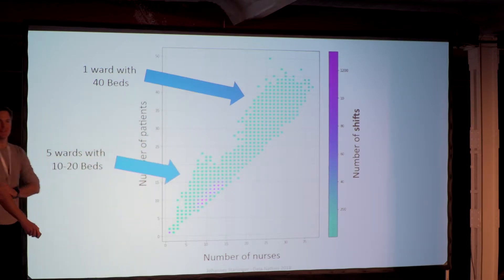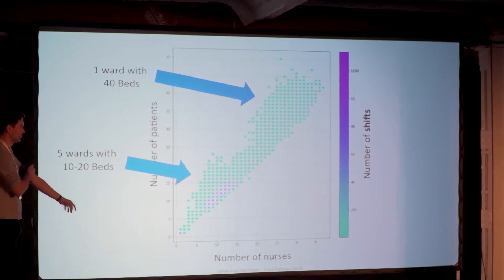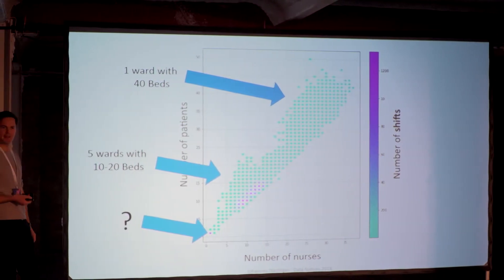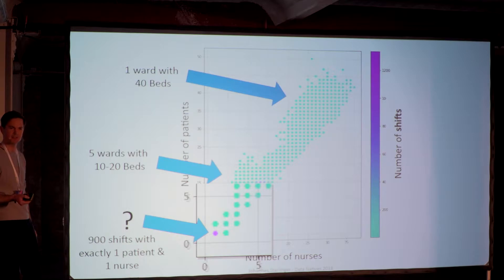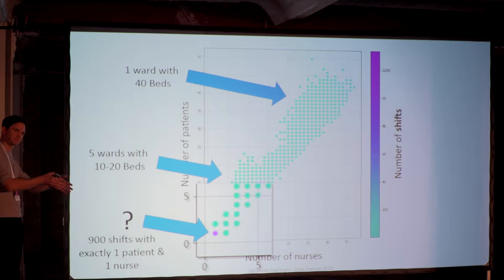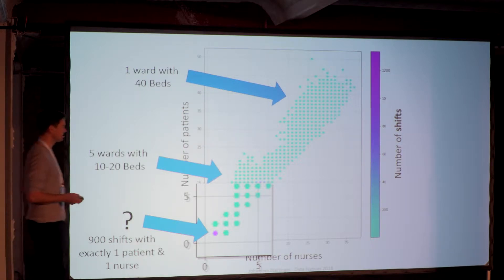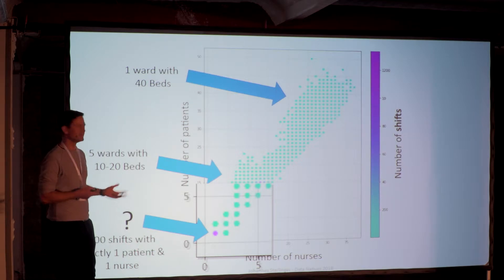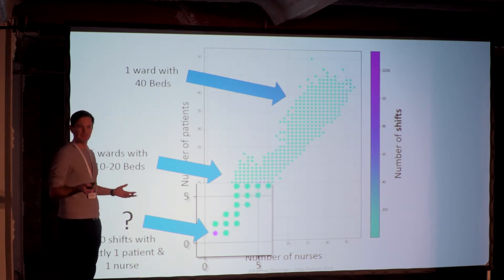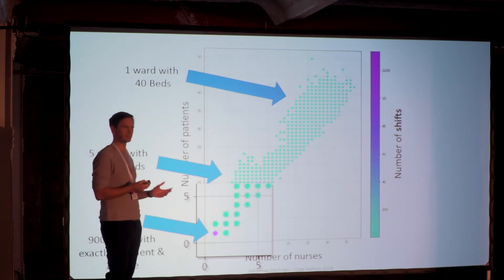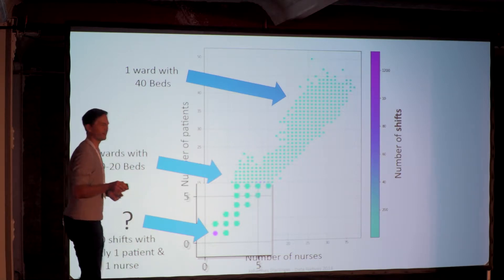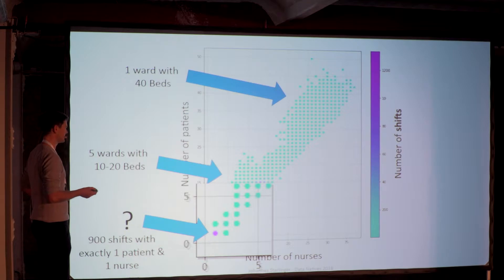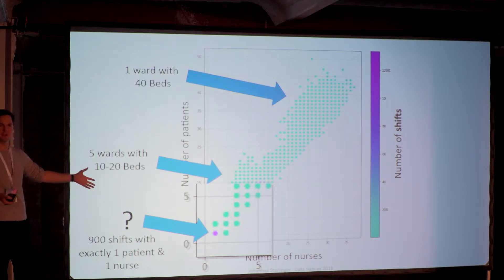One interesting thing that occurred to us doing this rather simple analysis is that there is a high accumulation in the one-to-one area — 900 shifts where you have exactly one patient and one nurse. That's kind of awkward. We're quantifying this error right now; obviously there's something wrong with the data. At first glance, nurses just don't enter when they're on shift. Data is dirty, and we have to take care of this when we want to do an analysis like this.